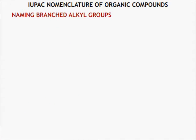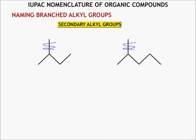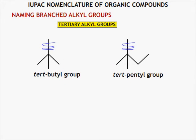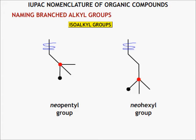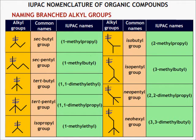Now let's explain some branched alkyl groups. The attaching carbon bonded to two other carbon atoms gives secondary alkyl groups. When the attaching carbon is bonded to three other carbon atoms, they are called tertiary alkyl groups. In isoalkyl groups, a methyl group is attached to the second-last carbon atom. In neoalkyl groups, the second-last carbon atom is attached to two methyl groups. Note that secondary and tertiary prefixes are not taken into account during alphabetization, whereas iso- and neo- prefixes are taken into account.